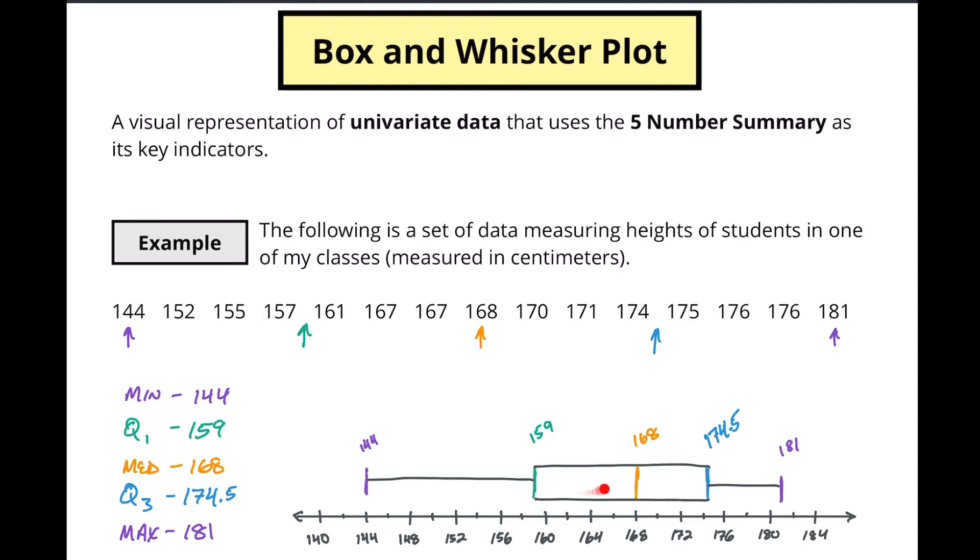In the second 25 percent of our data we've got a spread from 159 to 168 and then of course the third 25 percent of our data goes from 168 to 174.5 and then the last 25 percent goes from 174.5 to 181.